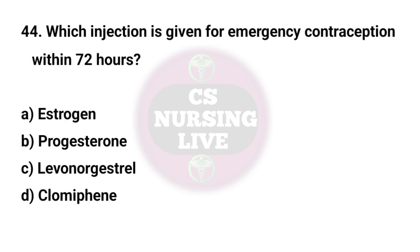Question No. 44. Which injection is given for emergency contraception within 24 hours? Right answer is C. Levonorgestrel.